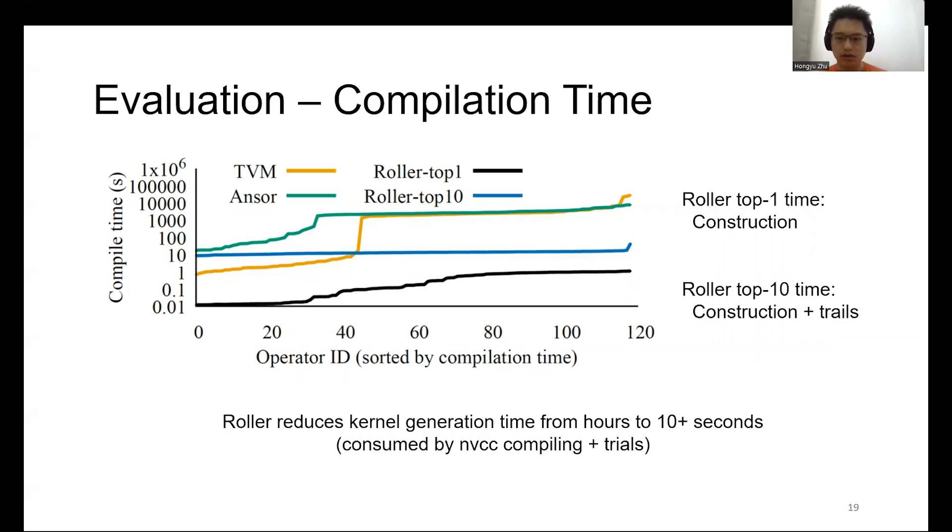This figure shows the sorted per operator compilation time for each auto-compiler and for all 119 operators. For Ansor and AutoTVM, the average compilation time is about 40 minutes. Several operators could cost over two hours. For AutoTVM, some operators have manually written templates that require no searching, but some operators could cost over seven hours. On the contrary, Roller's top 10 compilation takes only 13 seconds on average.